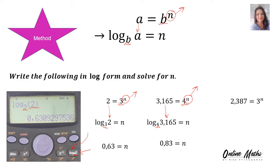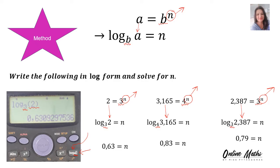Last example. 2.387 is equal to 3 to the power of n. You write log again. The base of the exponent stays the base of the logarithm. This number goes with your logarithm, equals, and the exponent becomes the subject of the formula. Enter into your calculator and your answer is 0.79.